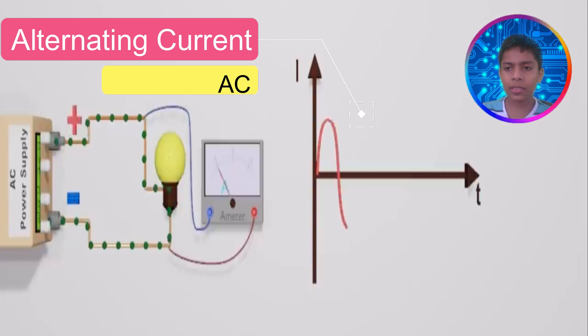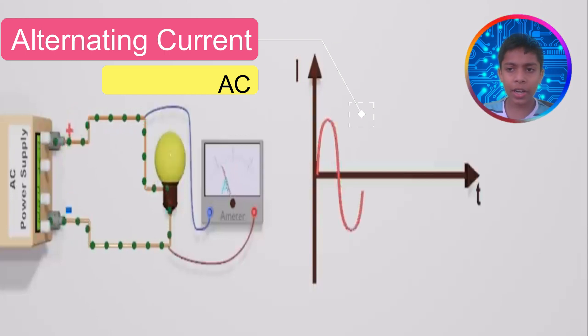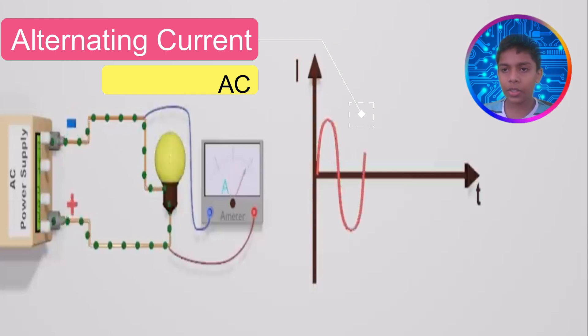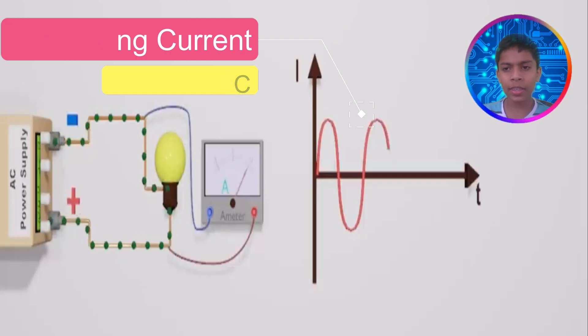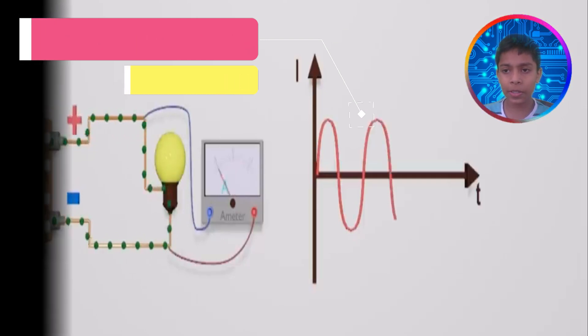As mentioned, we get alternating current to our homes, and it changes its voltage about 50 times per second.